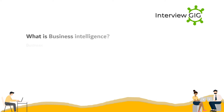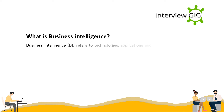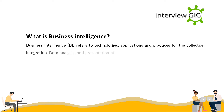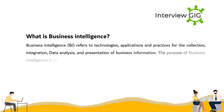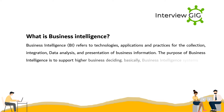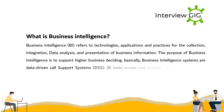What is Business Intelligence? Business Intelligence (BI) refers to technologies, applications, and practices for the collection, integration, data analysis, and presentation of business information. The purpose of business intelligence is to support better business decision-making. Business intelligence systems are essentially data-driven decision support systems (DSS).